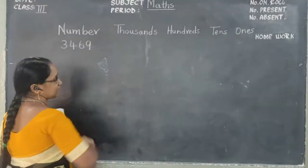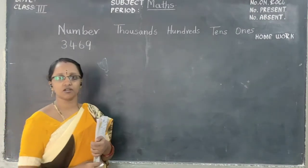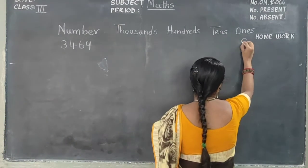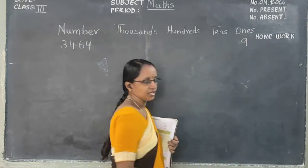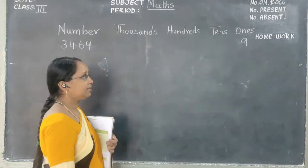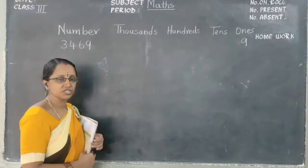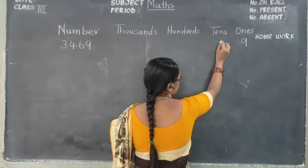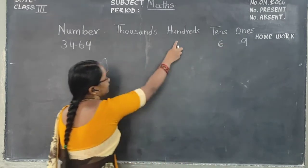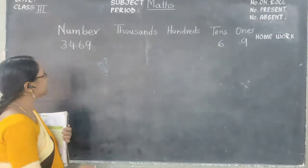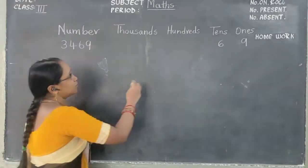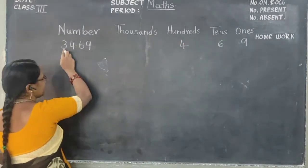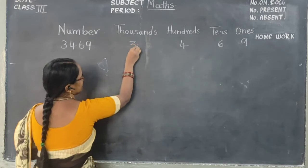So in the ones place, which number is there? Yes — nine. So nine you are going to write in the ones place. Next, in the tens place, which number is there? Number six. And in the hundreds place, which number is there? Number four. And in the thousands place, which number is there? Number three.